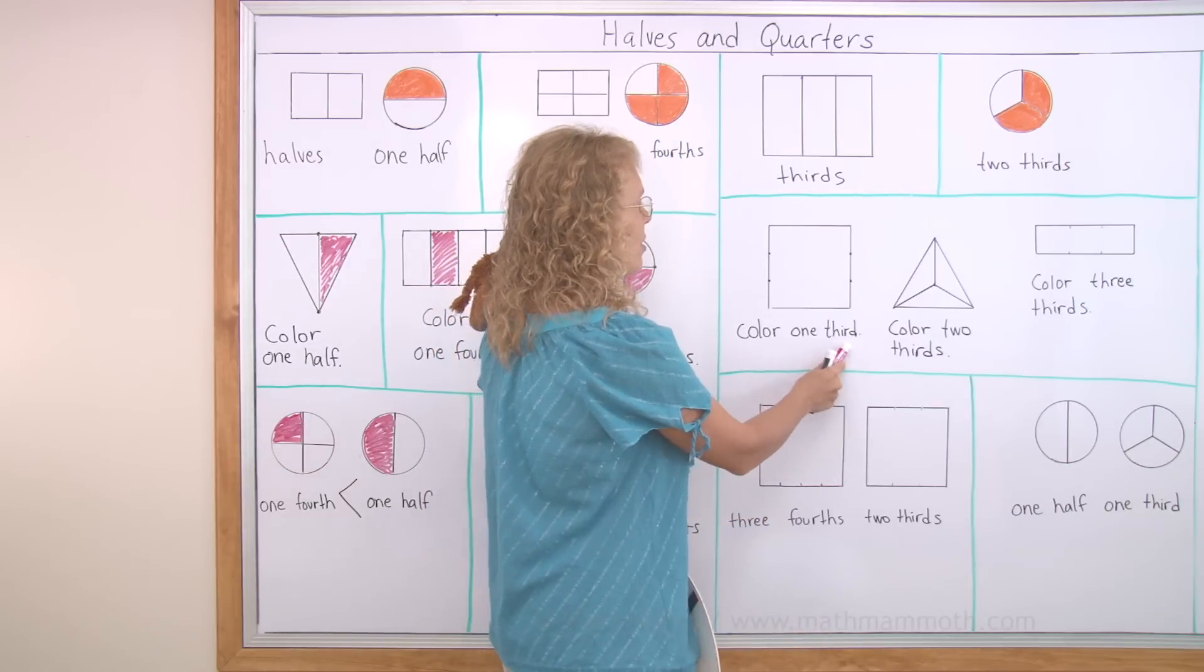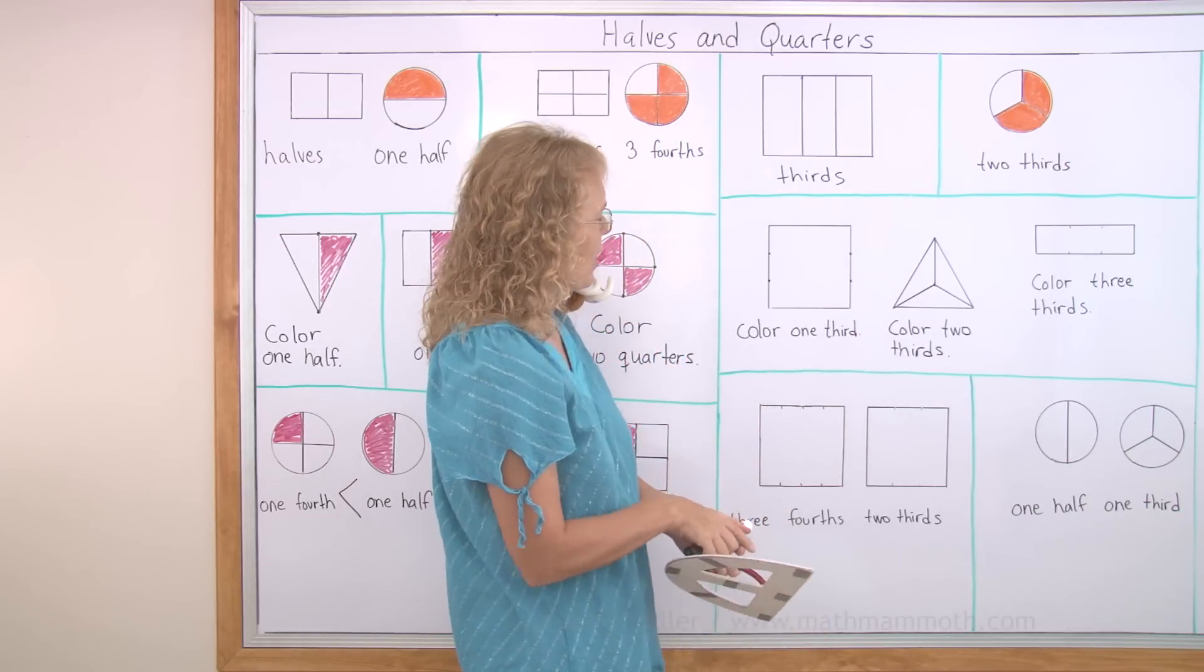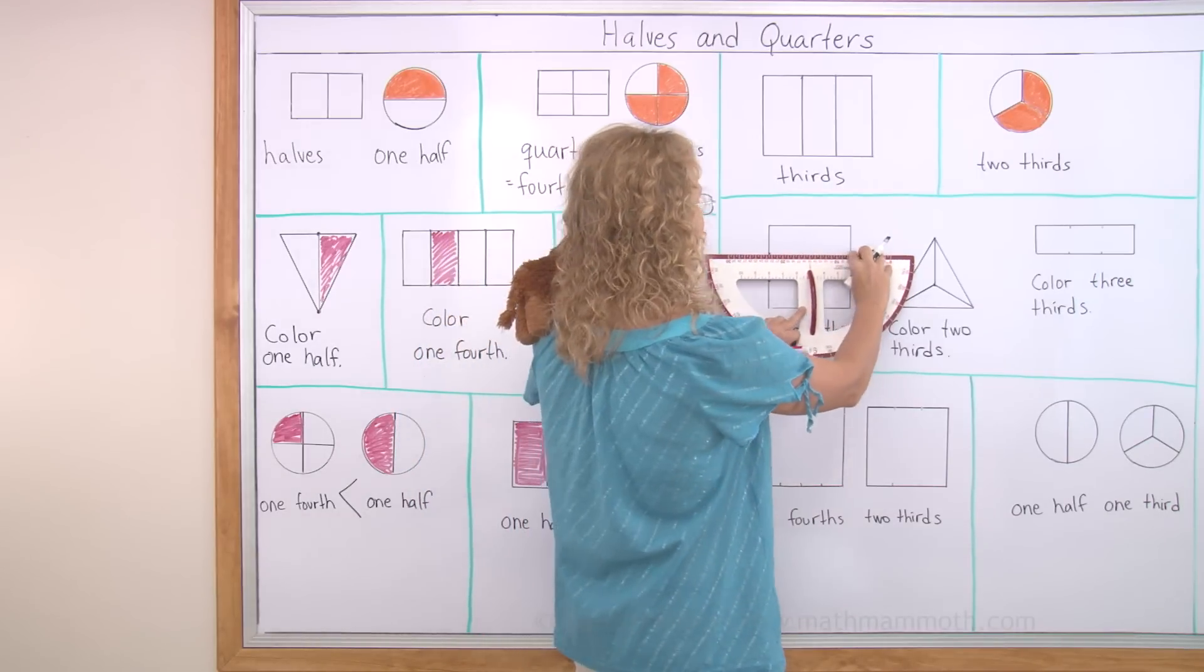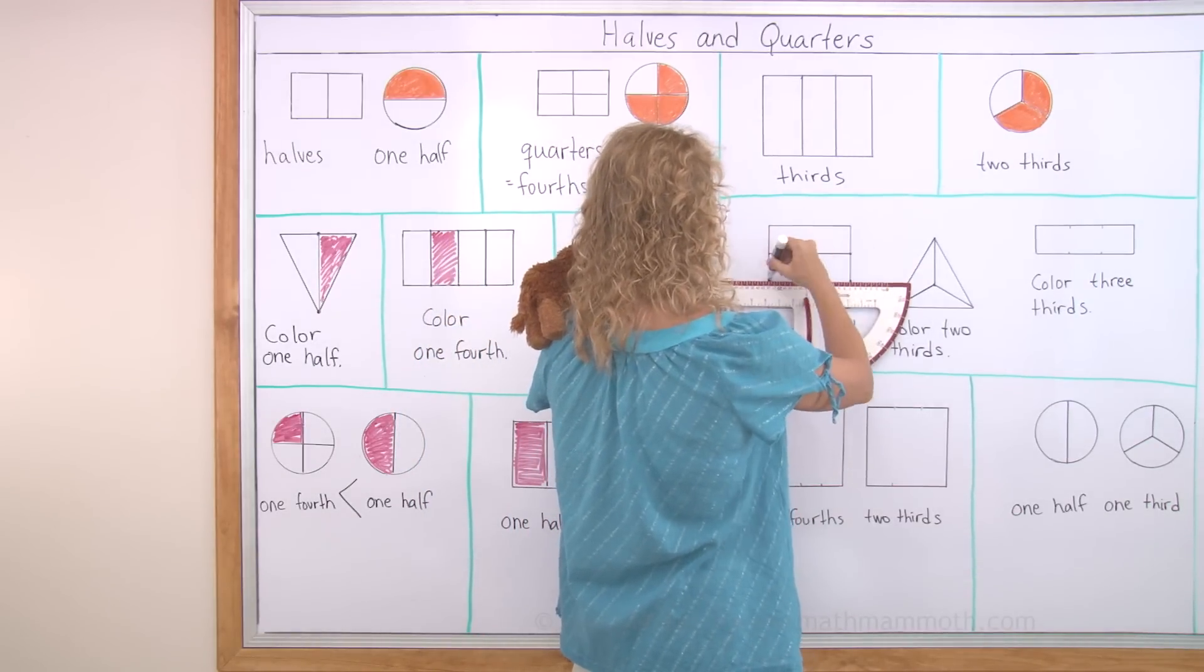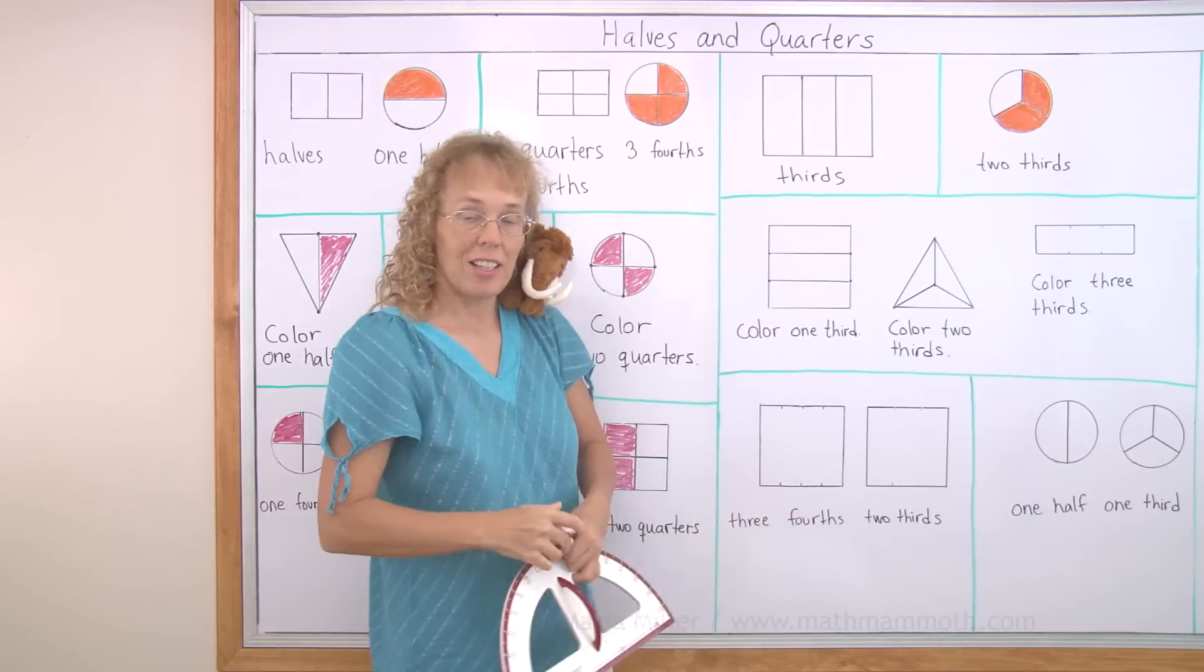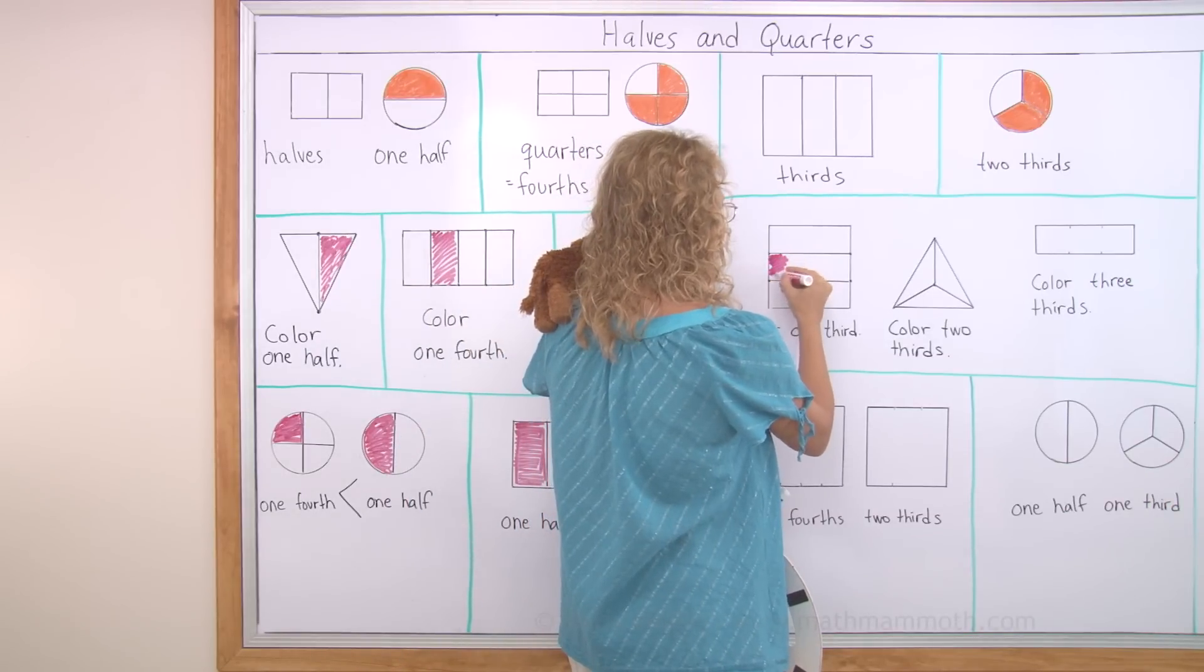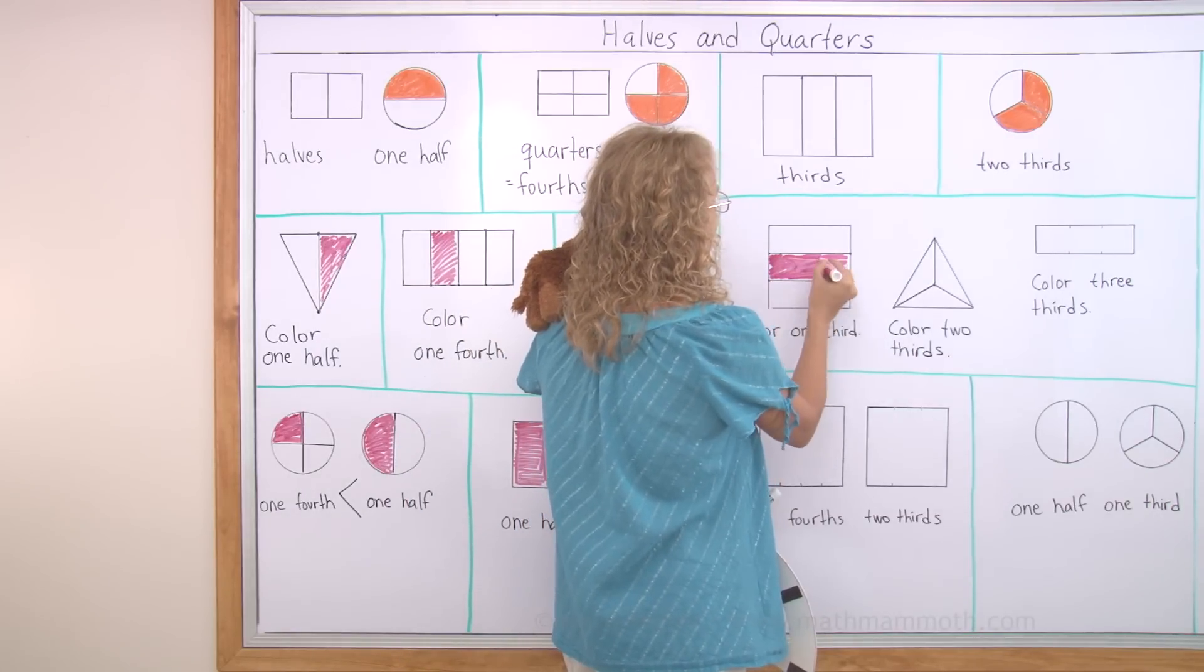Color one third. Okay. So first I will divide my shape into three parts. Yes, the dots will help. And then I color one of those parts. Now that almost looks like some flag. You know, many countries have flags where they have stripes.